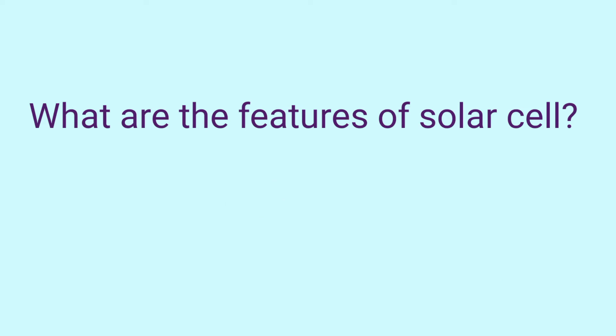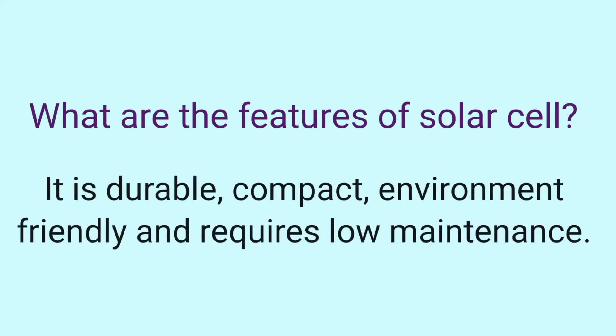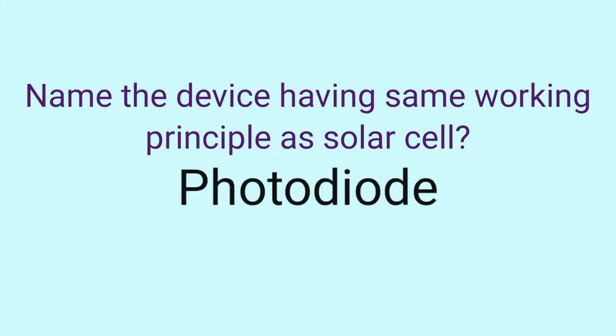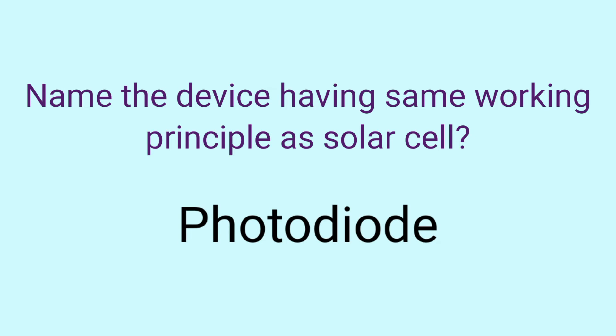What are the features of solar cell? It is durable, compact, environment friendly, and requires low maintenance. Name the device having the same working principle as solar cell. It is photodiode, but in photodiode an external bias is applied.